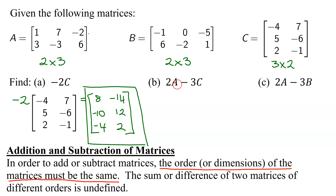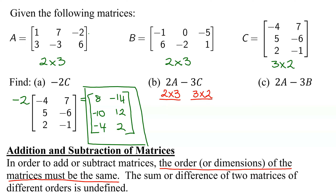We need to find two times matrix A. A is a two-by-three matrix, so two times A is also a two-by-three matrix. Matrix C is a three-by-two matrix, so three C is also a three-by-two matrix. Are these dimensions the same or different? They're different. So the sum or difference of two matrices of different orders is undefined. The answer to part B is undefined.